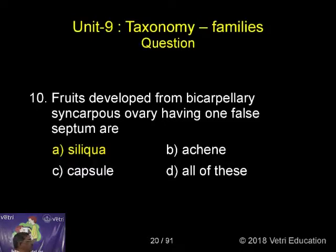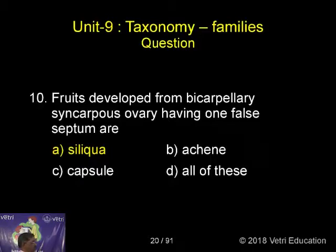Fruits developed from Bicarpellary Syncarpous ovary having one false septum are: A. Siliqua, B. Achene, C. Capsule, D. All of these. The correct answer is A.